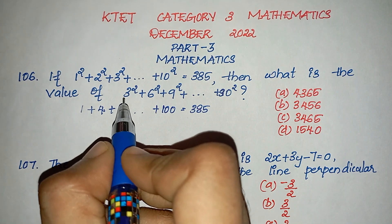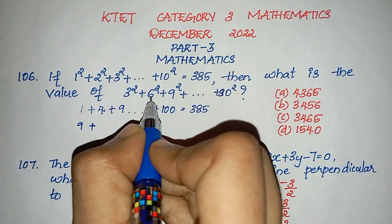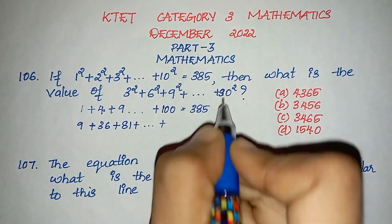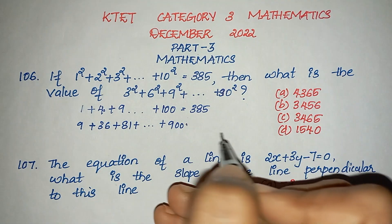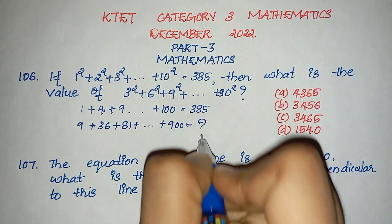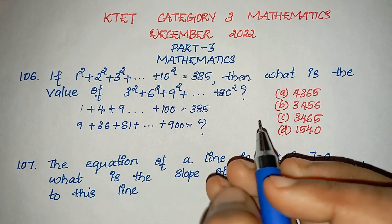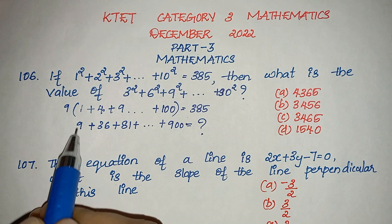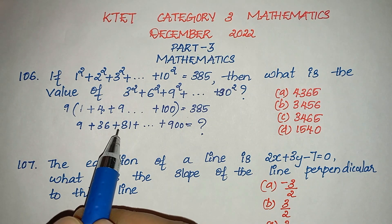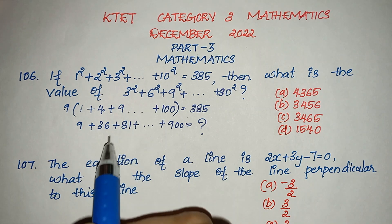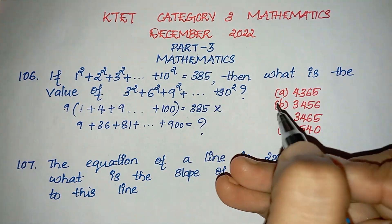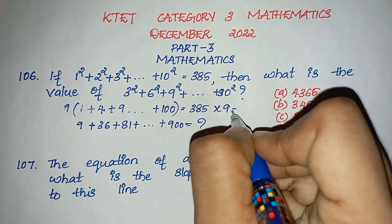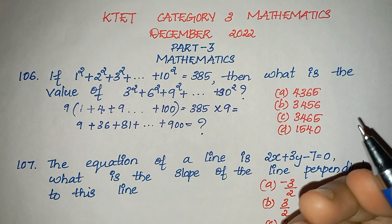If you add the sum — 3 squared is 9, plus 6 squared is 36, plus 9 squared is 81, and so on up to 30 squared — you can factor out 9. So 9 times 1 is 9, 9 times 4 is 36, 9 times 9 is 81. If you have 9 multiplied by the left side, you will get 9 multiplied by the right side, which gives 9 times 385.